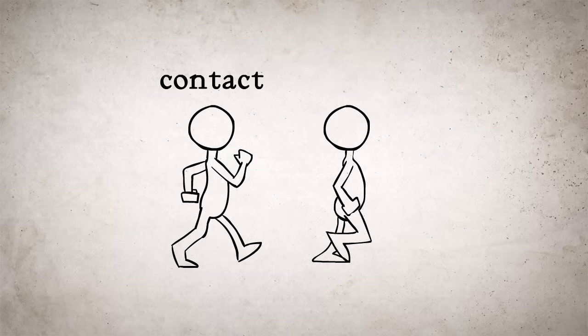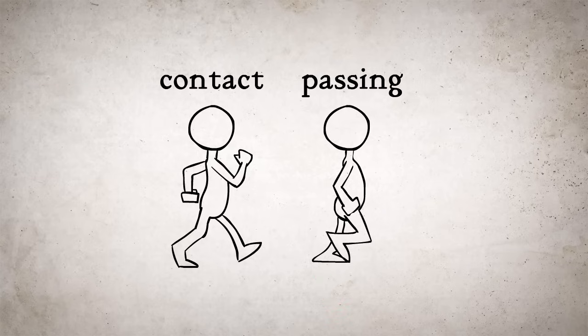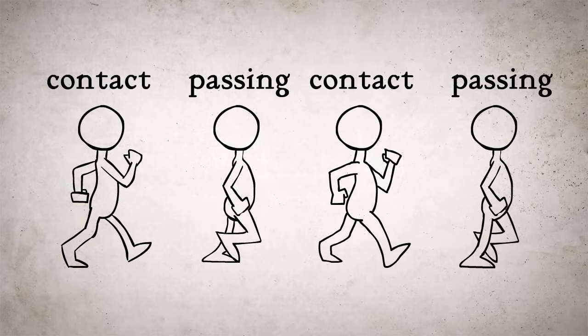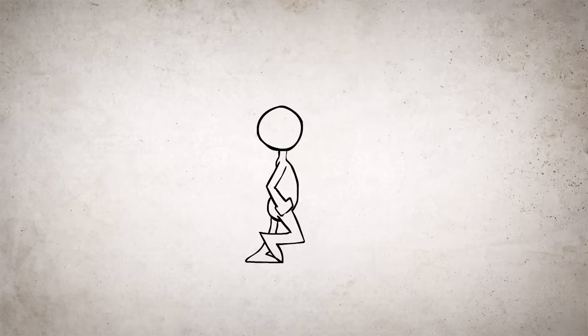The second pose is called the passing pose, because it is where the other foot directly passes the first foot. To complete the cycle, we need to repeat these two poses and reverse them in order to let both feet take a step. So just from these four drawings, we already feel like the character is walking.